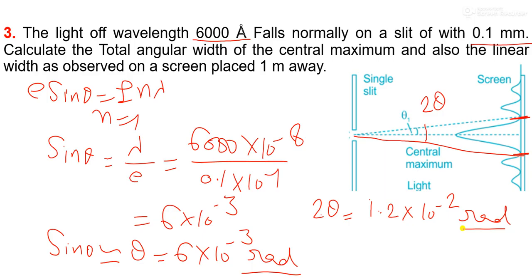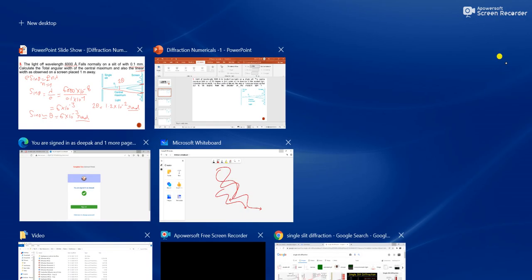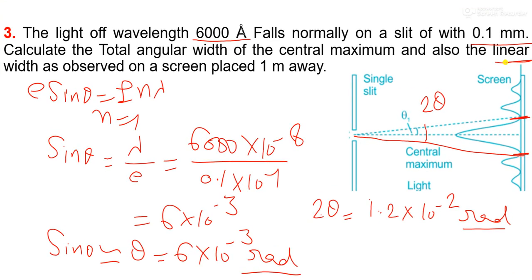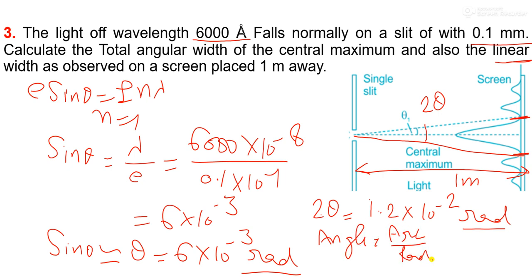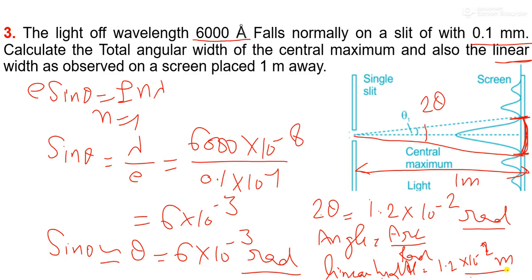From here we also calculate linear width. The screen is placed at a distance of 1 meter. We know that angle equals arc upon radius, so 2 theta equals linear width upon radius 1 meter. So linear width equals radius into angle, which is 1.2 into 10 to the power minus 2 into 1 meter, giving 1.2 into 10 to the power minus 2 meter.